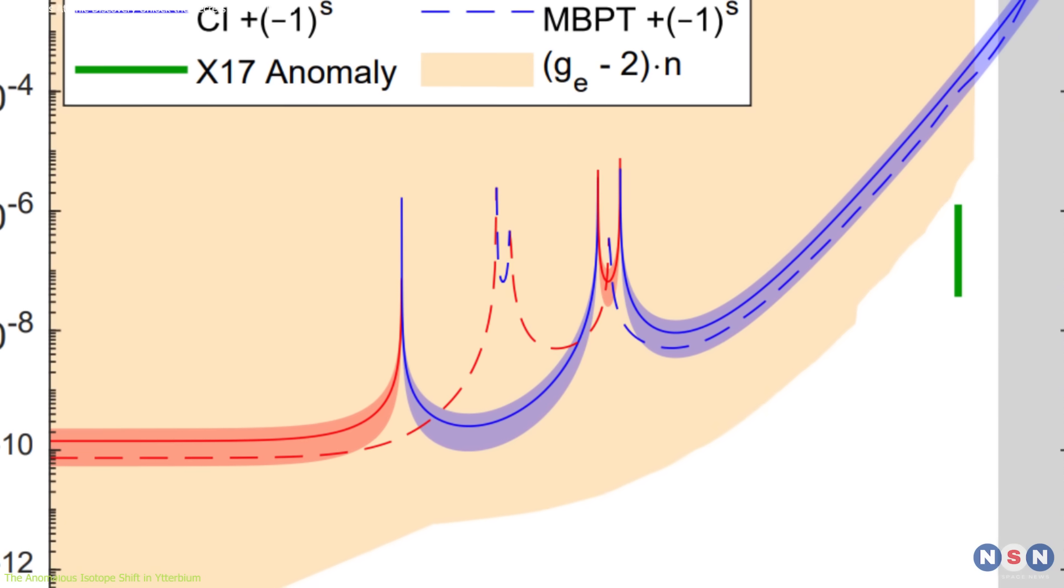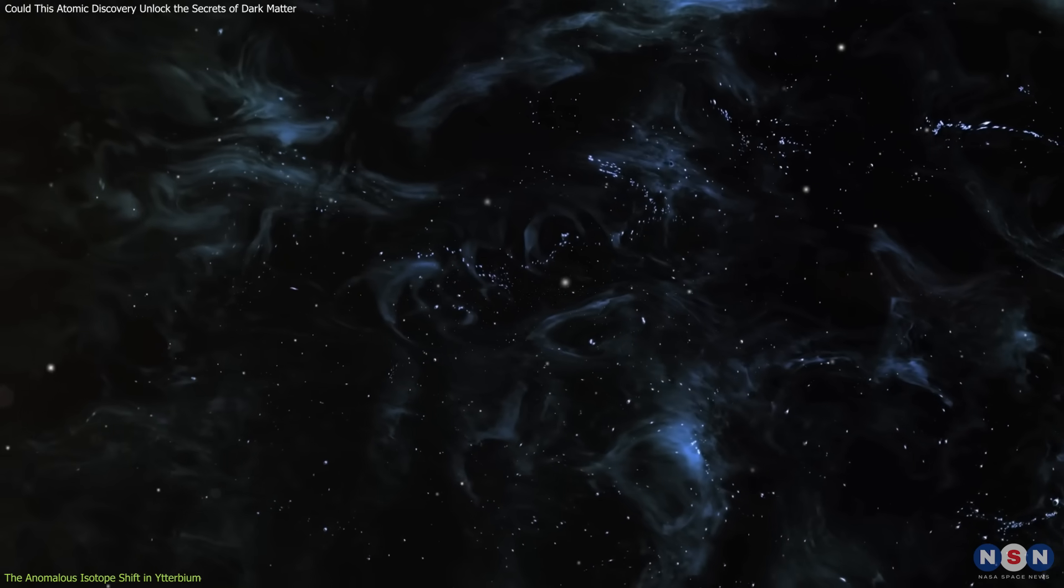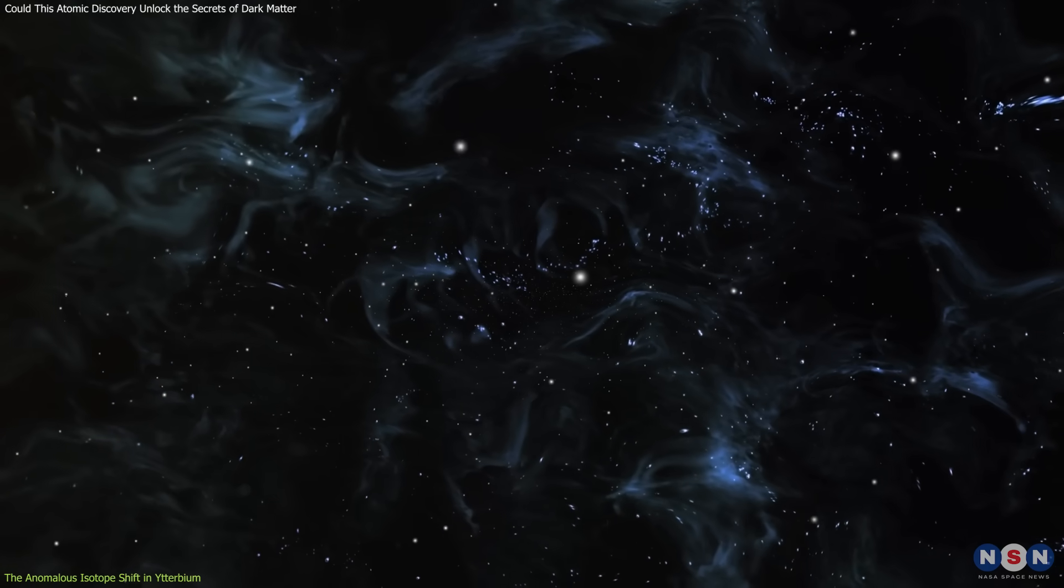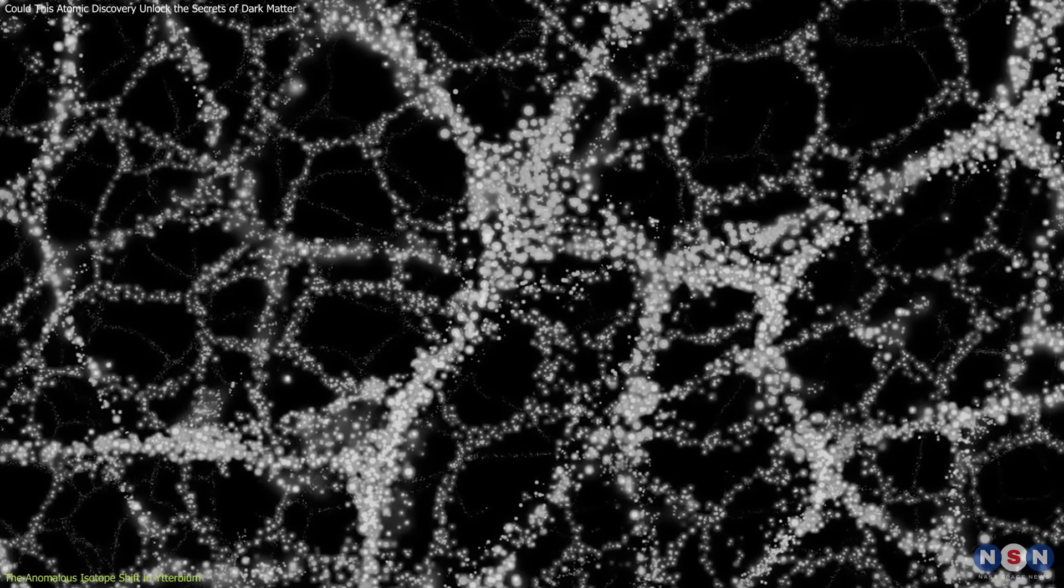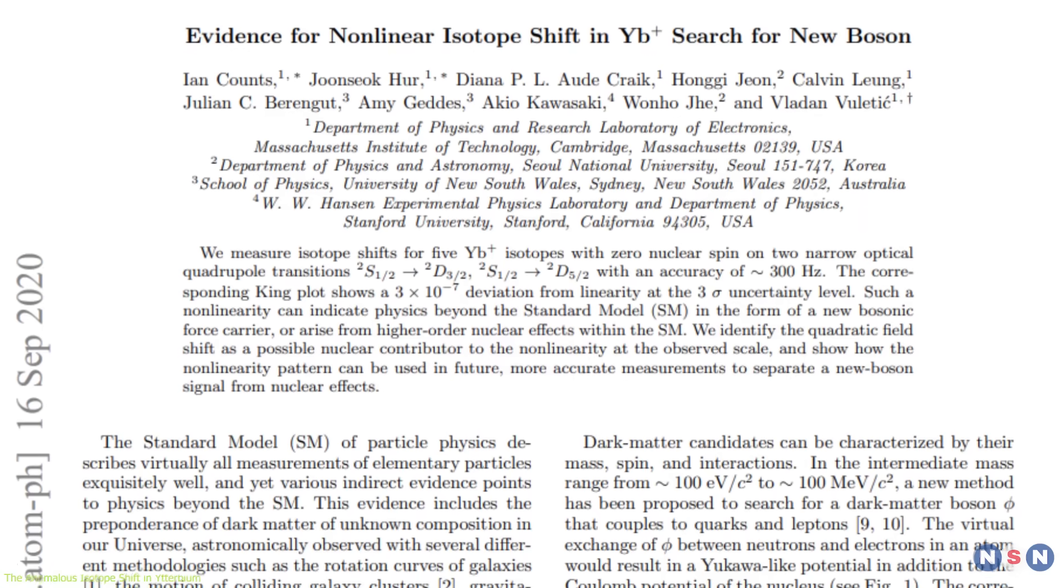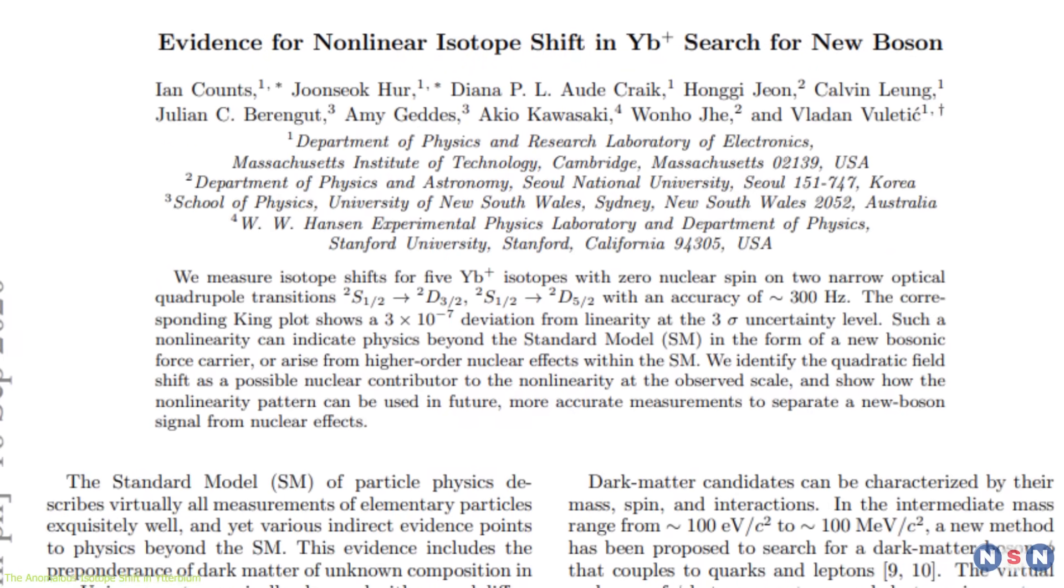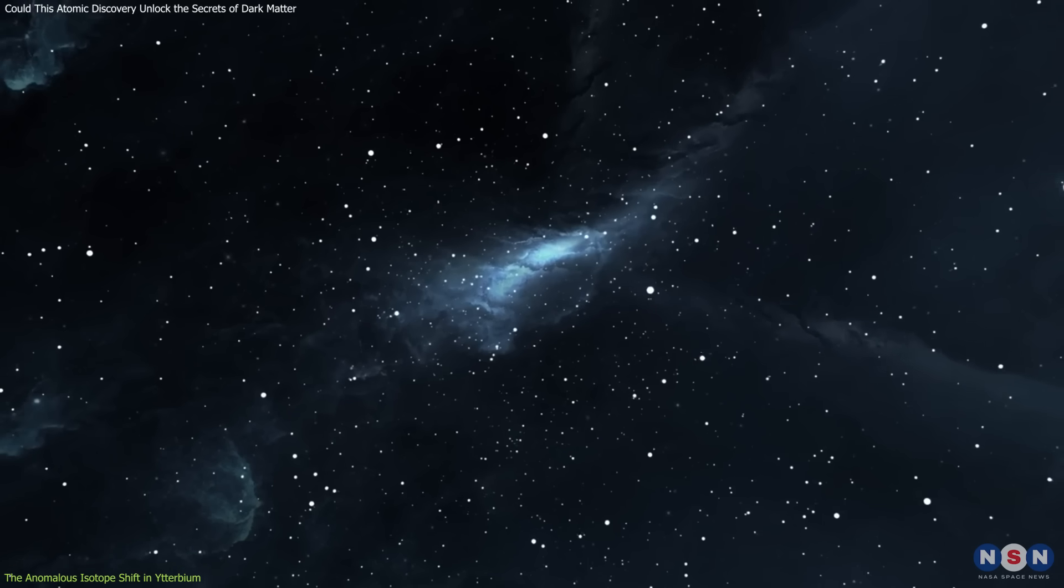If this deviation was real, it could mean one of two things. The first possibility was that the isotope shift was caused by a new dark force, an unknown interaction between ordinary matter and dark matter. If true, this would be a groundbreaking discovery, one that could reshape our understanding of fundamental forces in the universe.